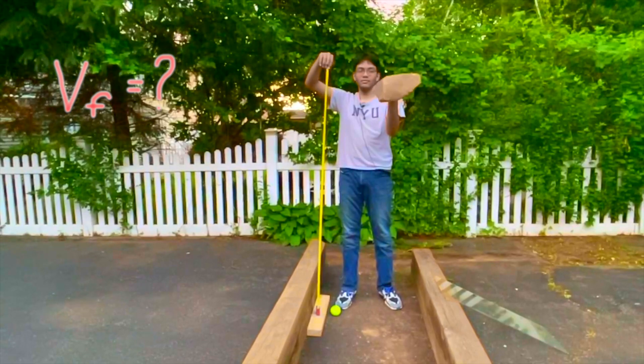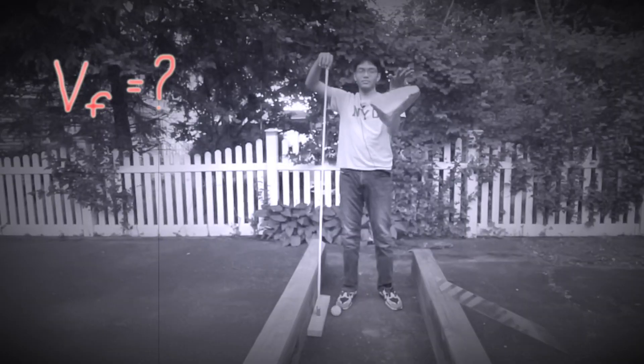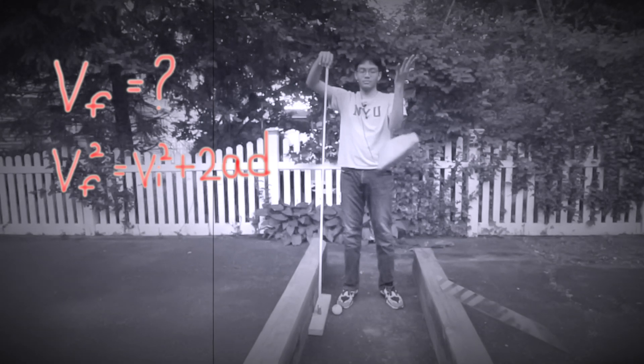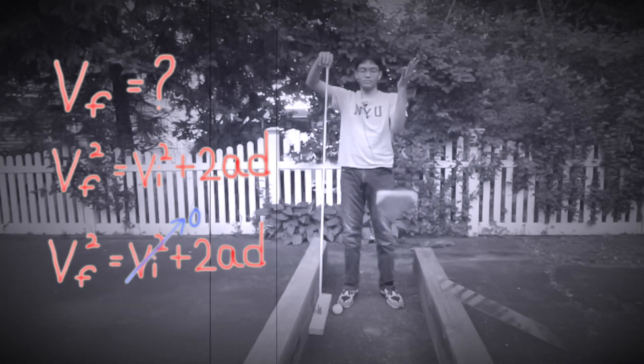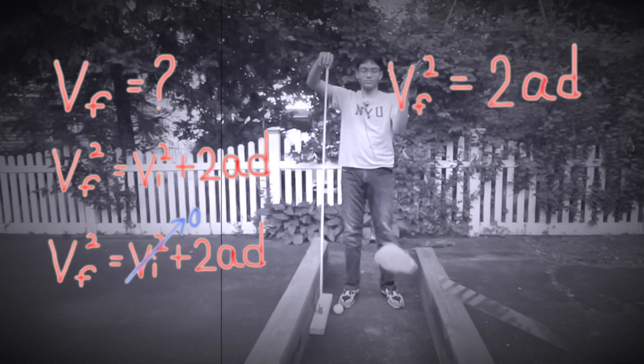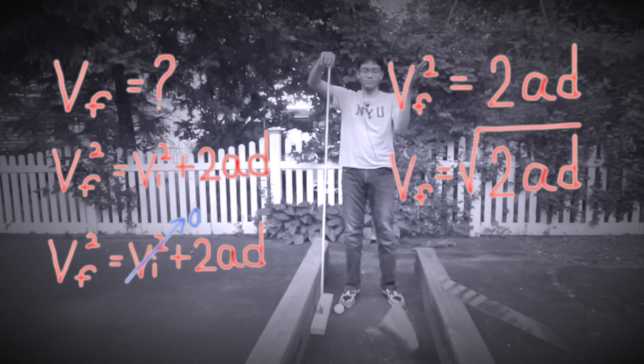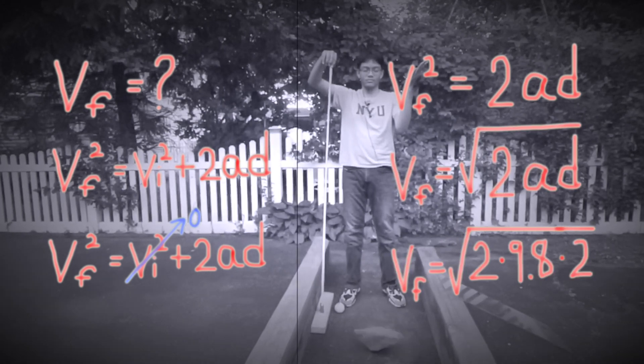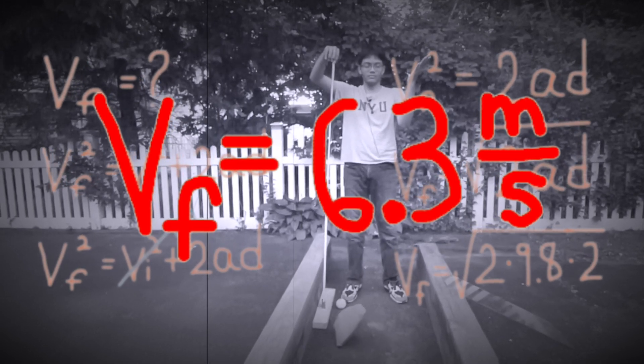Now we want the final velocity of the rock. That's going to be Vf² = Vi² + 2ad. Again, Vi² is going to be zero—it starts from rest. So we're left with Vf² = 2ad. Vf is the square root of 2ad. If you plug in the numbers, it's going to be, again, 6.3 meters per second.